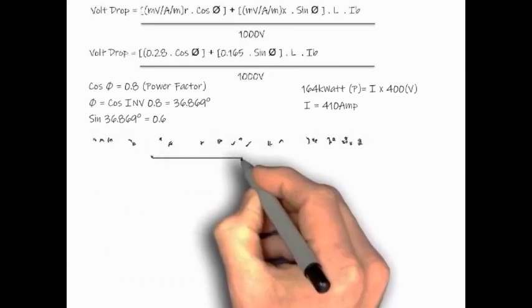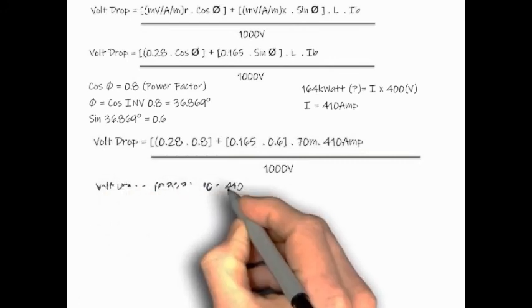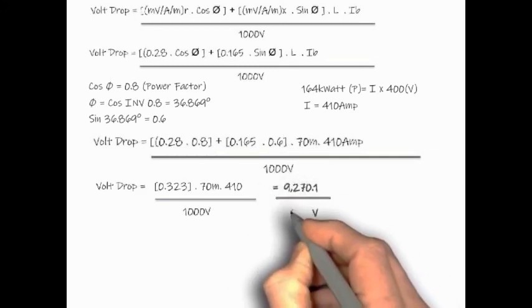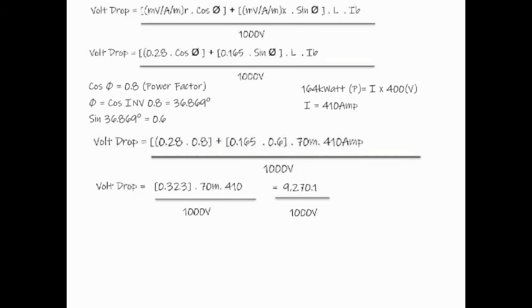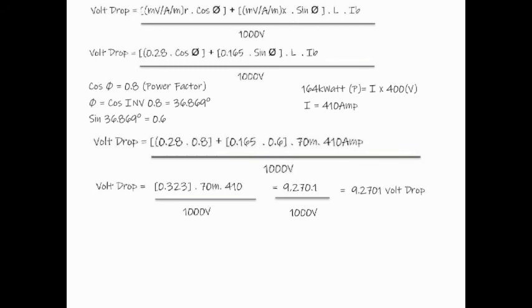Moving next, I will put all this value into the formula. Voltage drop will be equal to 0.28 multiplied by cosine theta, which is 0.8, plus 0.165 multiplied by sine theta, which is now 0.6, multiplied by 70 meters, multiplied by 410 amps, divided by 1000 volts. With the equation of voltage drop equal to 0.323 multiplied by 70 meters, multiplied by 410 amps, divided by 1000 volts, this will give you 9,270.1. Divide this by 1000 volts, you will get the value of 9.2701.